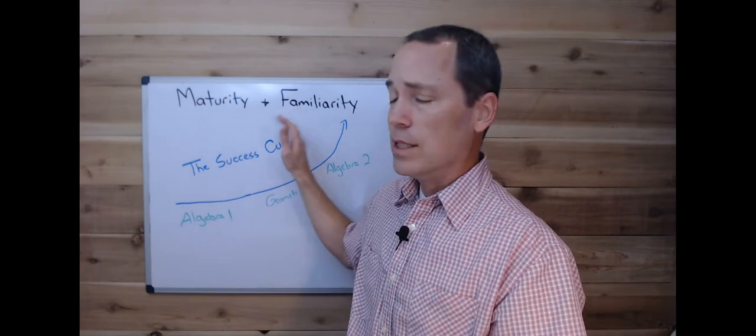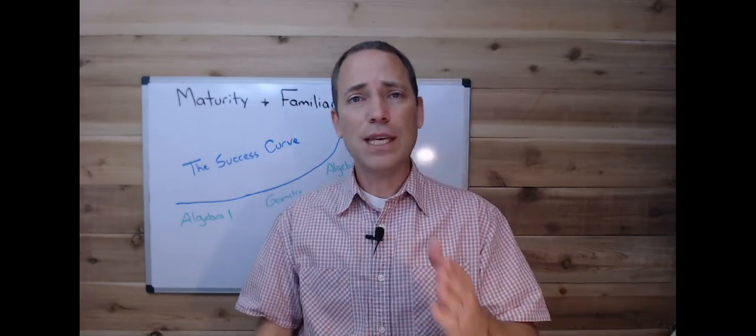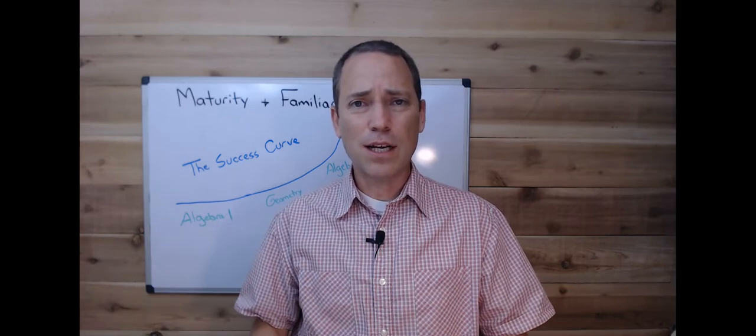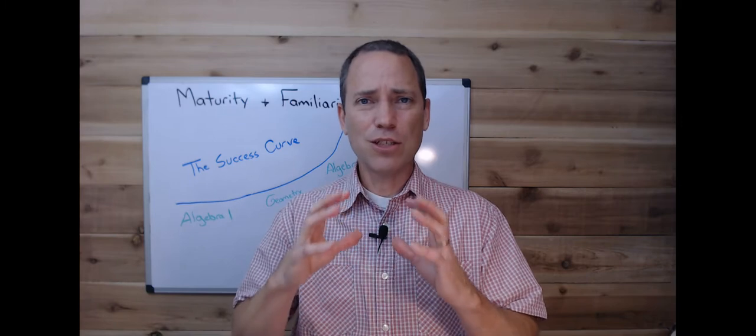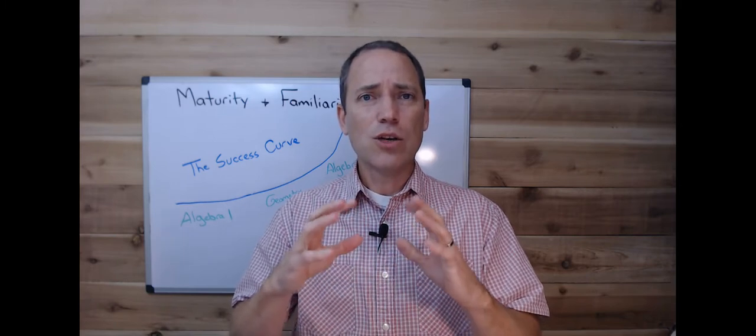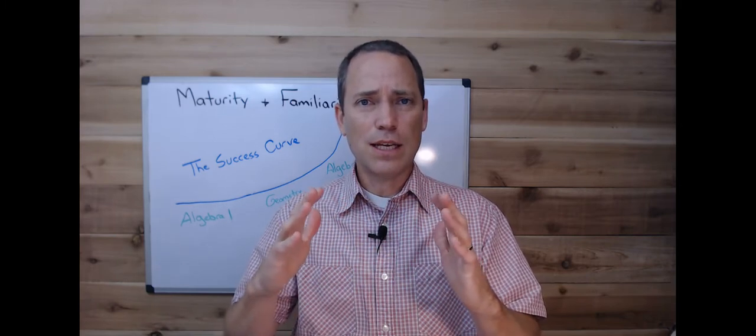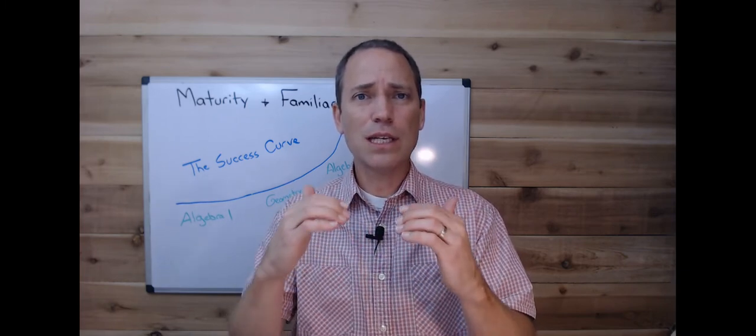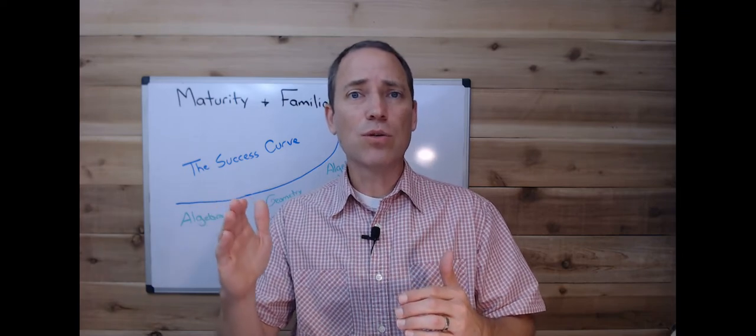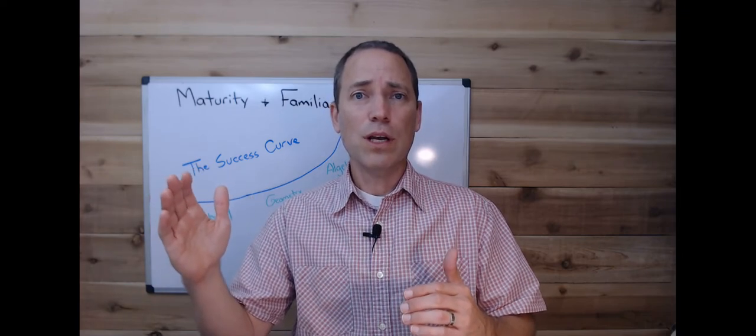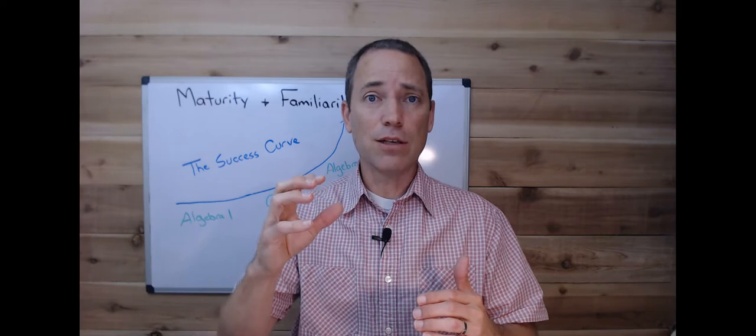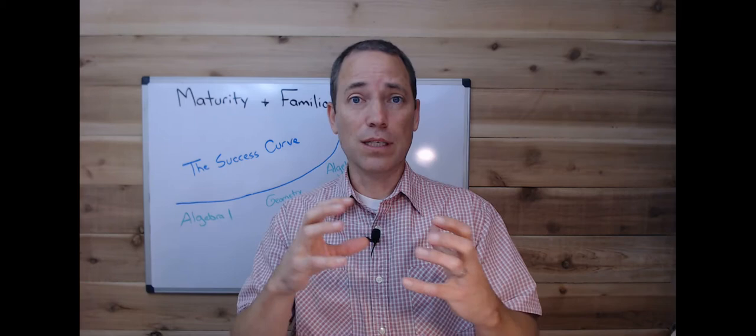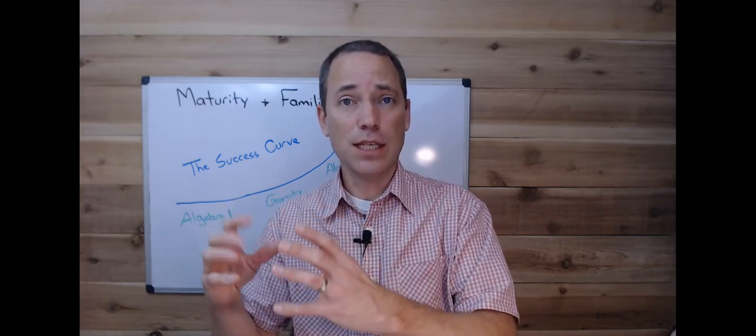And then familiarity is this concept of when a student begins Algebra 1, things are brand new. There are these brand new abstract concepts and the brain just doesn't have anything to grasp onto with that. So if you can stick with it and get those concepts, it might take a little while, but when those concepts start getting into the brain, then when they're in their later courses, Geometry, Algebra 2, they have a familiarity. They're able to recognize some of those things that they struggled with before and suddenly they're easier and they become easier and then easier.